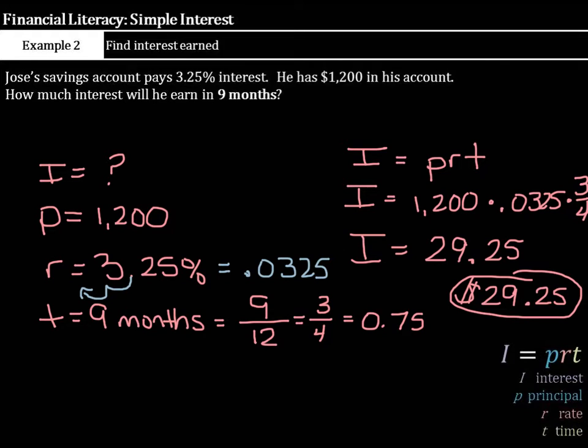One of the key mistakes that I see on this type of problem, T equals nine months. We have to get that into years. Whether it's nine twelfths, three-fourths, or 0.75 hundredths of a year, that's what you need to do.